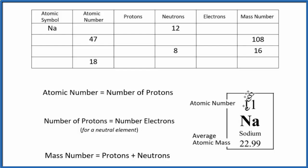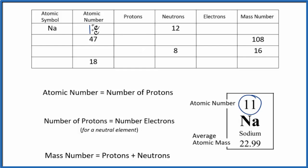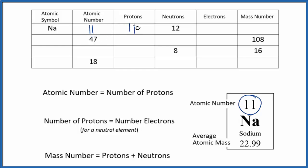For sodium, Na, the atomic number is 11. So we have sodium with atomic number 11 — we can put 11 in for the atomic number, and since the atomic number equals the number of protons, we put 11 there too. That's the definition of what sodium is. Sodium always has an atomic number of 11 and always has 11 protons.